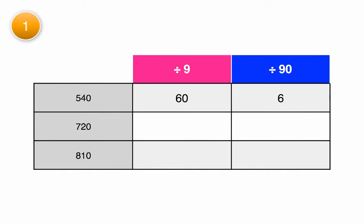Let's begin by looking for some patterns when we're dividing by multiples of 10. Our first problem is done for us. 540 divided by 9 is 60. 540 divided by 90 is 6.